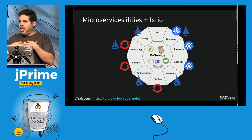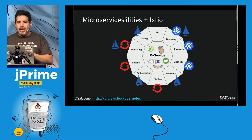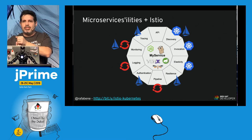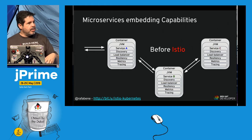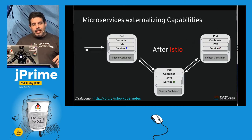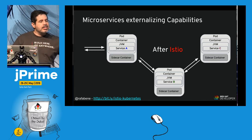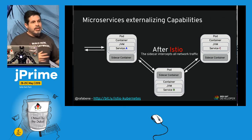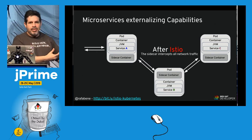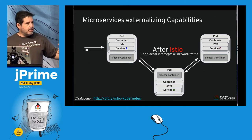As developers, instead of taking care of all those things, we just produce the API and let Istio, Kubernetes, and OpenShift handle the rest. Before Istio, we placed everything inside our microservice. After Istio, all those capabilities are placed inside a sidecar container that intercepts all inbound and outbound traffic using iptables rules.